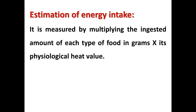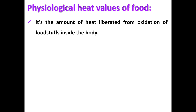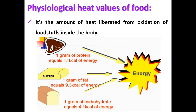Estimation of energy intake is done by multiplying the amount of food ingested in grams by its physiological heat value. Physiological heat value of food is the amount of heat liberated from oxidation of food inside the body. One gram of protein gives 4.1 kilocalories, one gram of fat gives 9.3 kilocalories, and one gram of carbohydrate gives 4.1 kilocalories of energy.